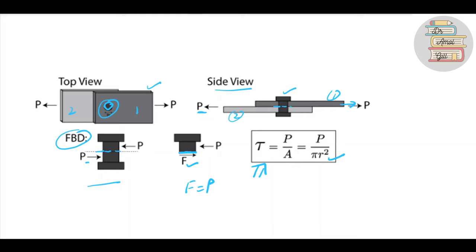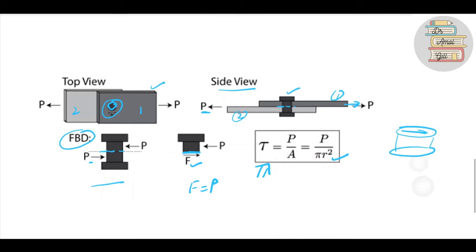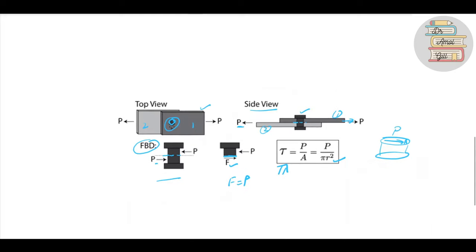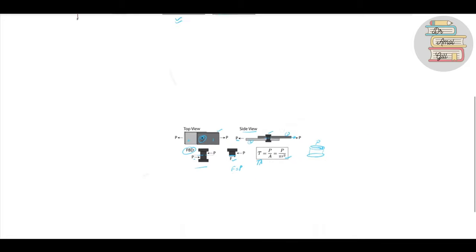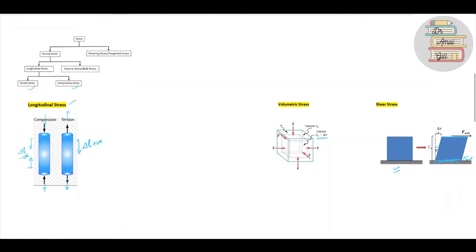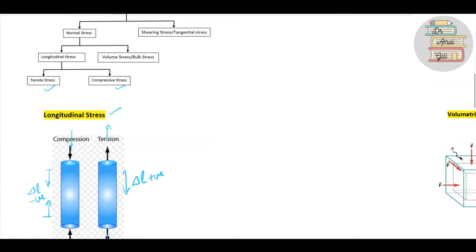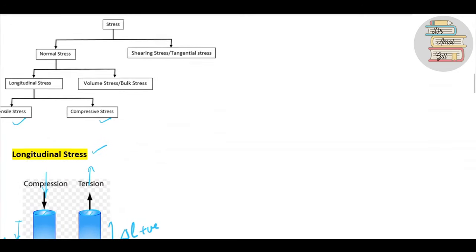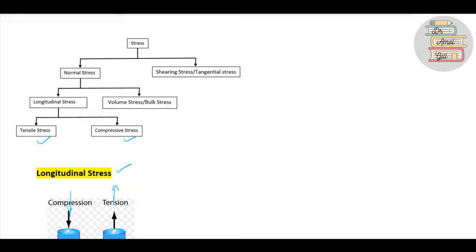The cross-section of the rivet is circular. Enlarging it, the force P acts on this circular area. I think you now understand the basics of these stresses and their classification. I hope you understand this basic classification of stress.